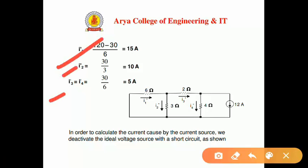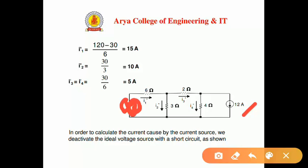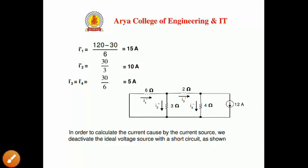The next step is to consider the second source — the 12-ampere current source — and replace the voltage source with its internal resistance, which is zero, meaning a short circuit. We now label the branch currents as I1'', I2'', I3'', and I4''. These currents are produced by the 12-ampere current source, and we proceed to find the currents in each branch.